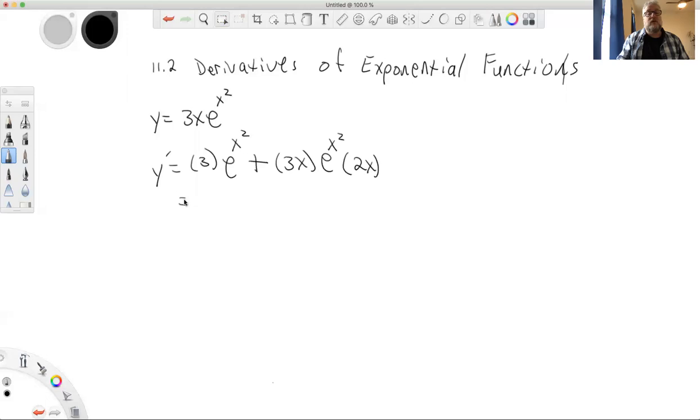So I simplify this to be 3e to the x squared plus 6x squared e to the x squared. No more simplification we can do. Okay, and let's try another one. Because that was so much fun.